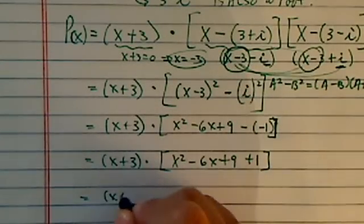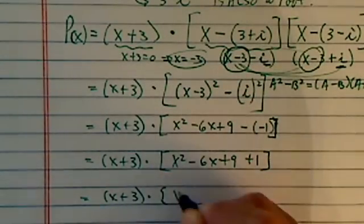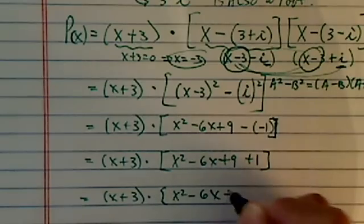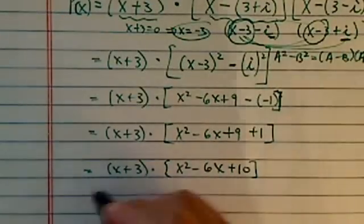So we have x plus 3 times x squared minus 6x plus 10. Now, if you want to, let's multiply this one out.